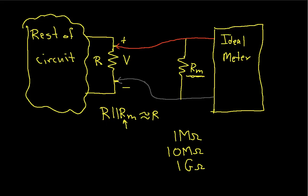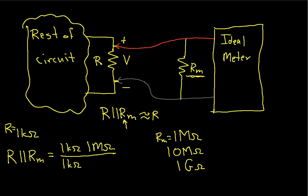So for example, if R were 1k ohm, so let's just look at an example here, and RM, let's just say is equal to 1 megohm, then the parallel combination will be 1k ohm times 1 megohm over 1k ohm plus 1 megohm.